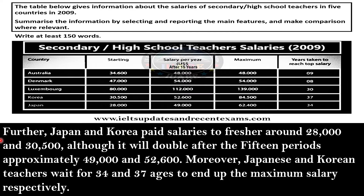Body Paragraph 2: Japan and Korea pay starting salaries of around 28,000 and 30,500 respectively, and these approximately double after 15 years to around 49,000 and 52,000. Moreover, Japanese and Korean teachers wait 34 and 37 years respectively to reach their maximum salary.